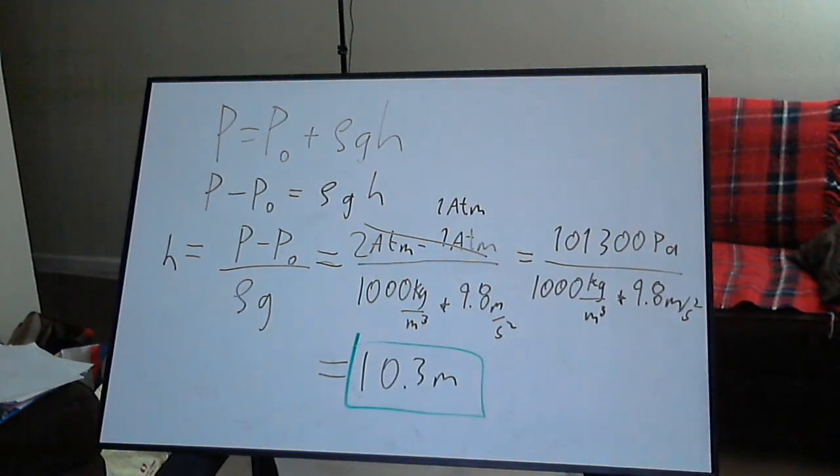Finally, we reach for the calculator and get our answer. This solution basically says that the pressure in water increases by 1 atmosphere for every 10 meters of depth.